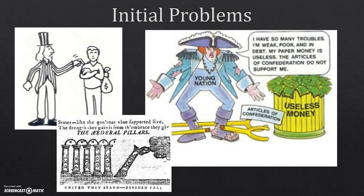A second problem was that the federal government had no power to tax people. Taxing was a touchy subject for the Founding Fathers — it's what got us into this whole business. To pay for the war, they had to ask states for donations. Very few states actually paid what they owed because there was no one to make them do it. Some didn't pay anything at all, and there was virtually nothing the federal government could do about it.